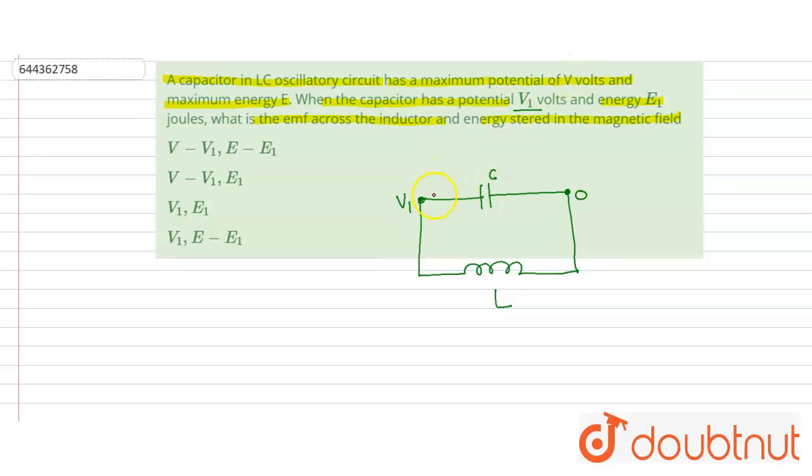This is the potential difference across the capacitor. And the energy stored in the capacitor is given E1. This will be equal to half C V1 square. This is the energy stored in the capacitor.